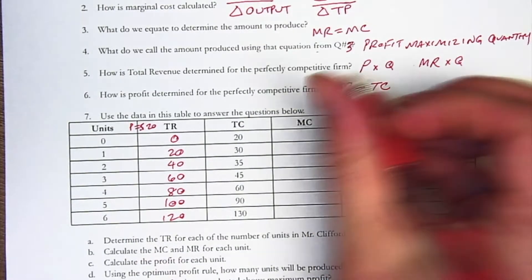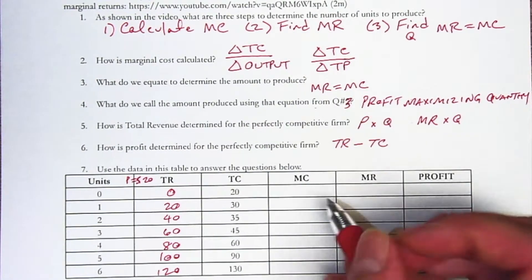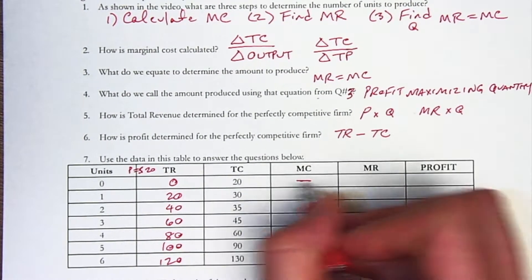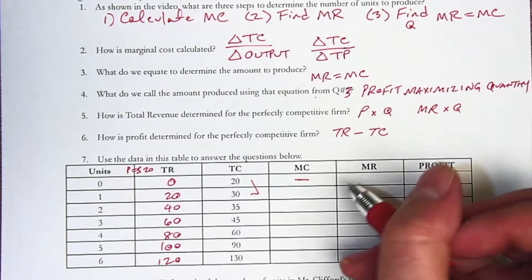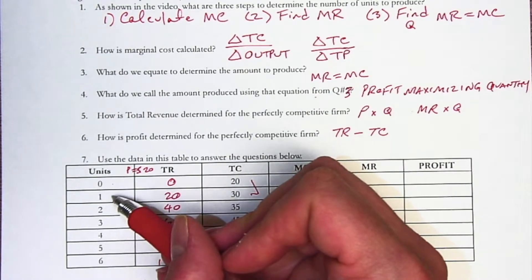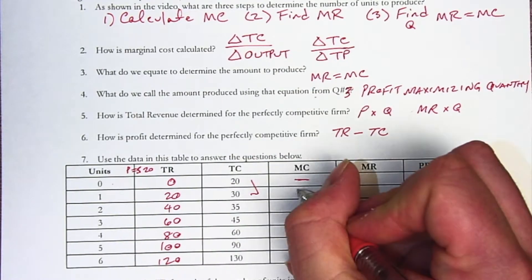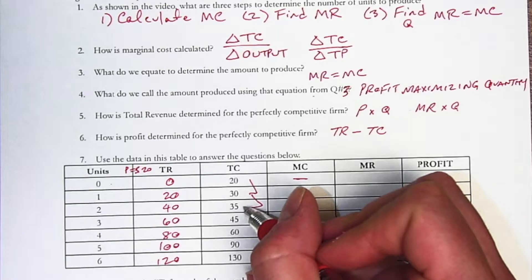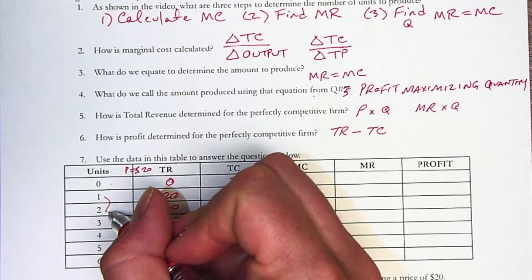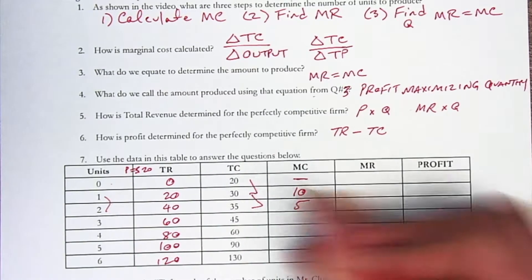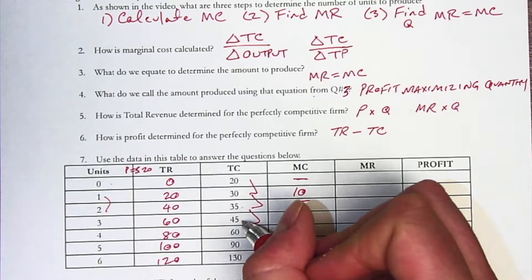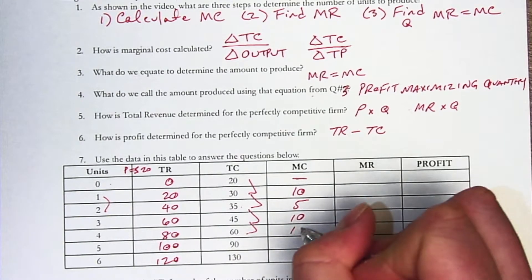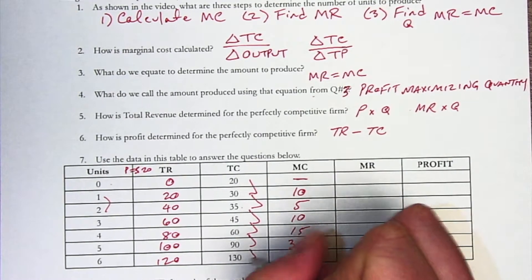And then we have marginal cost, which we know is the change in total cost over the change in output. The marginal cost for the zeroth unit doesn't exist. But for the change here, 10 divided by the change in units of output, which is 1, equals 10. We're going to do this here. 30 to 35 is a change in cost of 5 divided by the change in output of 1, so that's 5. The change here is 35 to 45, so we're back up again to 10. Then we go up to 15, to 30, and to 40.